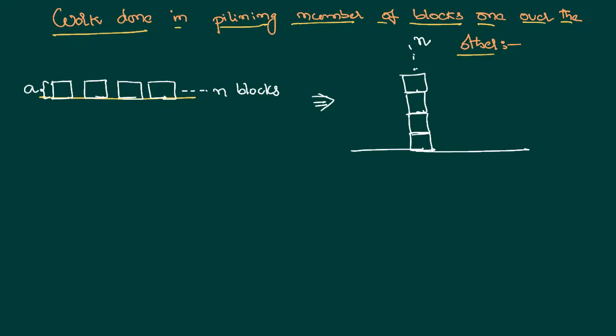Here in this case work done is happening because there is a change in the potential difference. Say for example each block is not having a mass at a point, rather mass is distributed over the system.